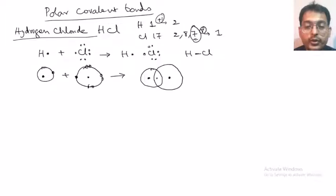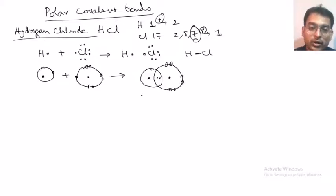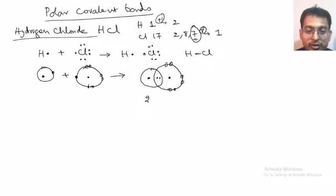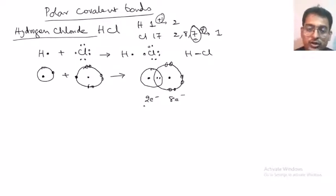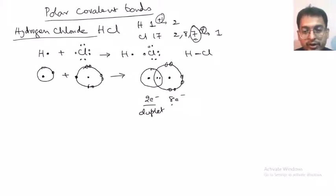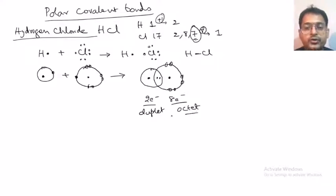Showing this in the orbital structure: hydrogen with one electron is combining with chlorine, which has 7 electrons in its outermost orbit. There is a covalent bond formation — a sharing of electrons. One pair is shared: 1, 2, 3, 4, 5, 6. The hydrogen atom now has 2 electrons, satisfying its duplet configuration. And chlorine now has 1, 2, 3, 4, 5, 6, 7, 8 — 8 electrons, satisfying its octet configuration.